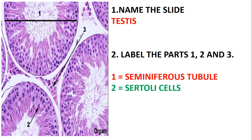Part two is just the Sertoli cells. If you look at those cells there, these are just the Sertoli cells. I'll explain their functions in the tutorial video I'm going to post soon. Part three is just the Leydig cells. So we have identified this slide as a testis: one — seminiferous tubule, two — Sertoli cell, three — Leydig cell.